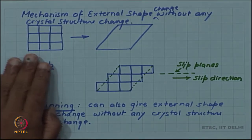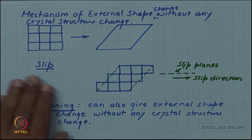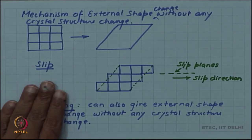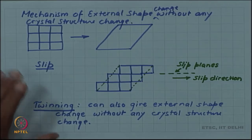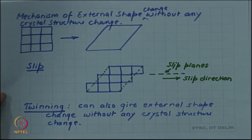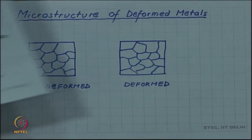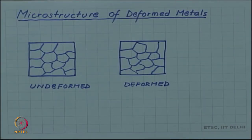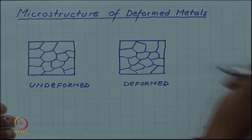The motivation for this explanation came from the fact that X-ray diffraction had already shown that there is no crystal structure change. But then there were other experiments indicating this kind of mechanism, and that was the microstructural study of deformed metal.